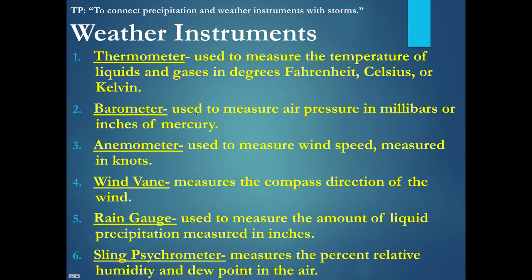What are the weather instruments? Number one, thermometer — measures temperature in Fahrenheit, Celsius, or Kelvin. Barometer is used for air pressure, and on page 13 of the ESRT, it's measured in millibars or inches of mercury. Number three, anemometer, used to measure wind speed.